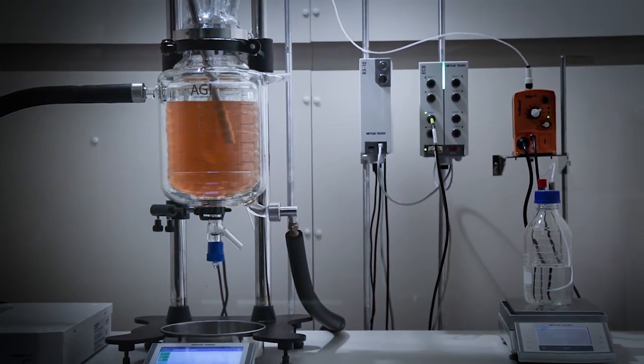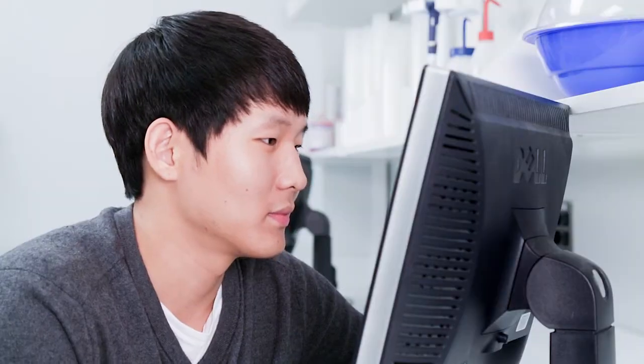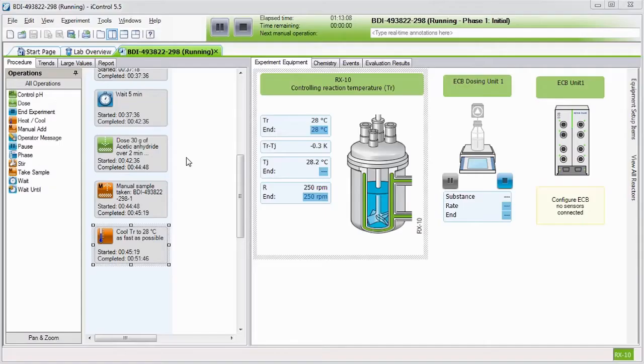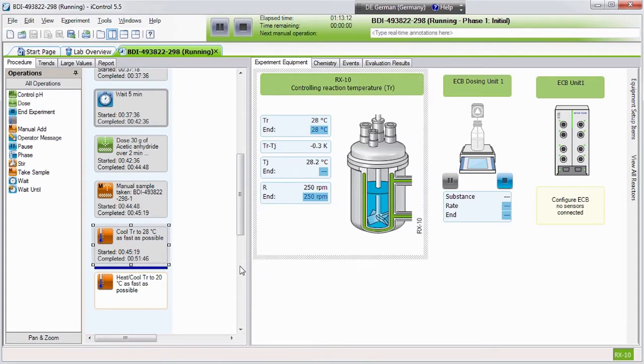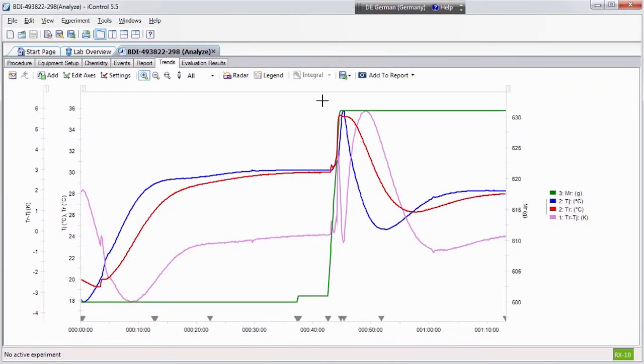When away from the lab, iControl software provides remote control and analysis. Powerful visualization tools allow chemists to identify key reaction events and develop reports to communicate findings.